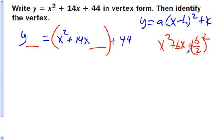I need to figure out what's b divided by 2 squared. So b would be 14, divide it by 2 you get 7, and then square it and you get 49. I'm going to add 49 here.